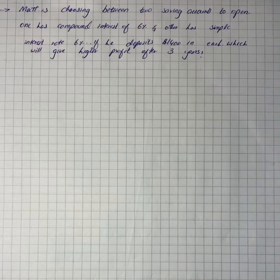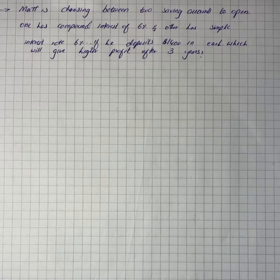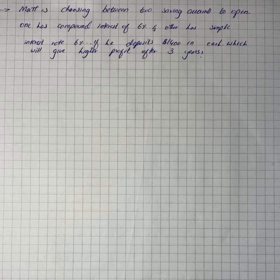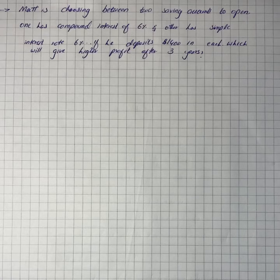We have a question that says Matt is choosing between two saving accounts to open. One account has compound interest of 6% and the other has a simple interest rate of 6%. If he deposits $1400 into the account that he chooses, which account will give him the highest amount of interest after three years?